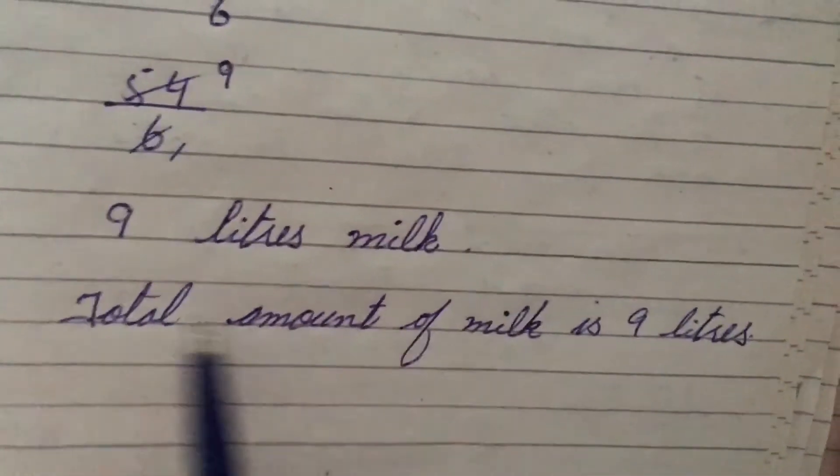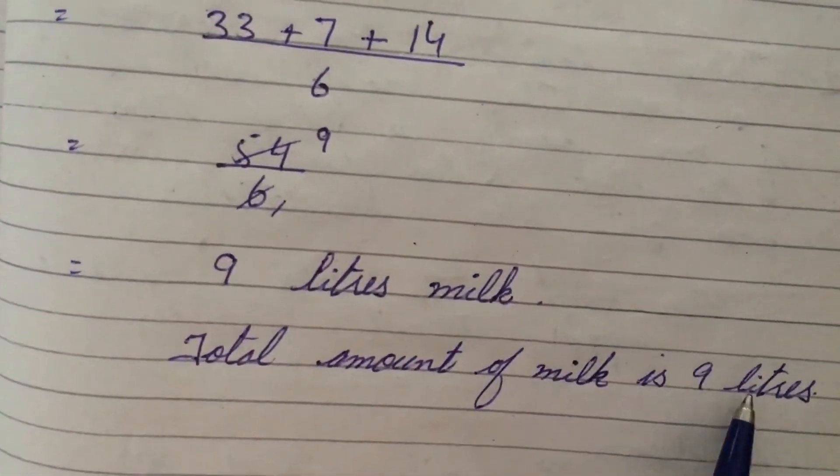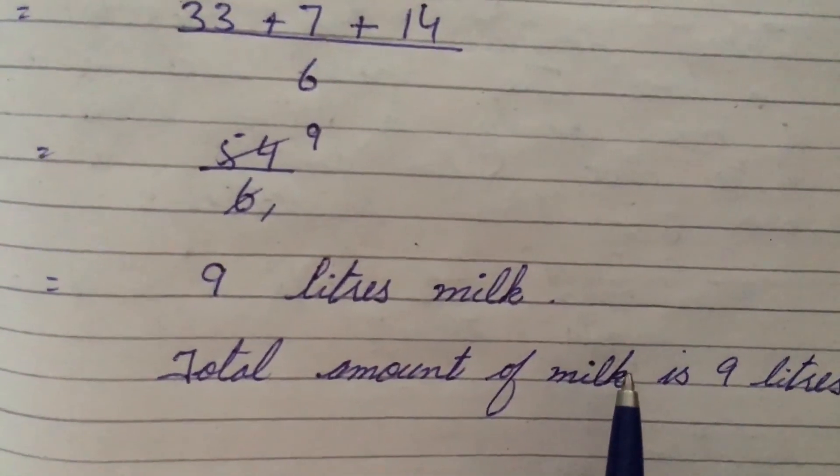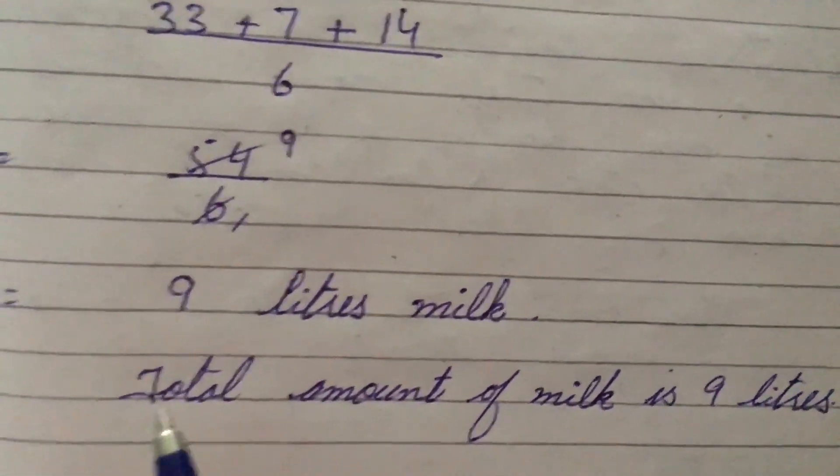So total amount of the milk is 9 liters. This is a word problem so we have to write it like this. So 9 liters is your answer. Students, you are going to write down this question in your neat copies. 9 liters is your answer.